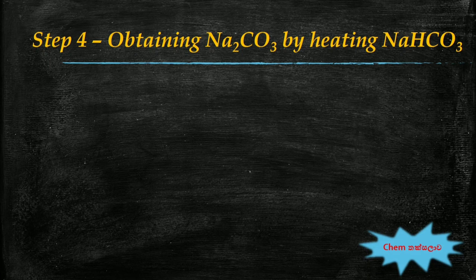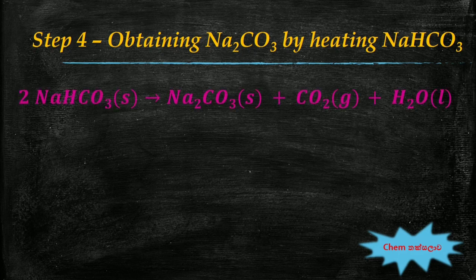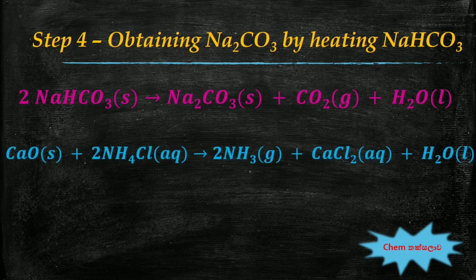The fourth and final step of the Solvay process is obtaining sodium carbonate. Anhydrous sodium carbonate is obtained by heating the sodium bicarbonate separated in the previous step, and the carbon dioxide formed is sent back to the carbonation tower. Ammonium chloride, a byproduct of this process, is used to regenerate ammonia gas. To get ammonia gas, ammonium chloride solution is reacted with calcium oxide obtained by decomposition of limestone, and the ammonia gas formed is passed to the ammonification tower.